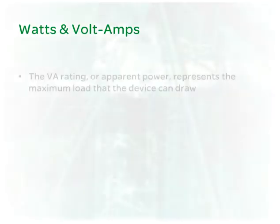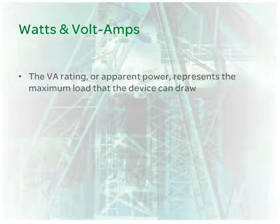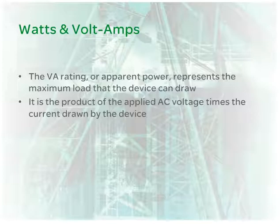The volt-amps rating, or apparent power, represents the maximum load that the device in question can draw. It is the product of the applied AC voltage times the current drawn by the device.